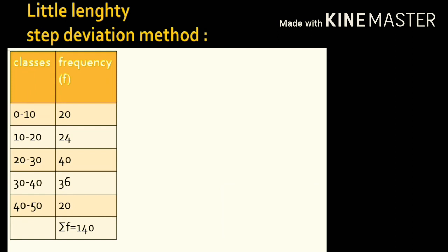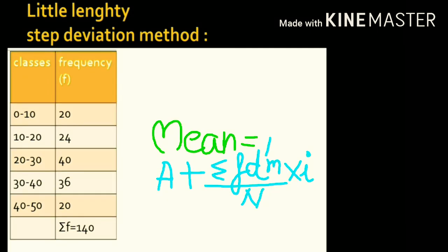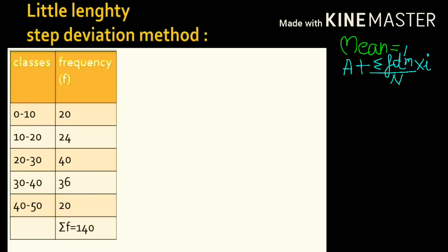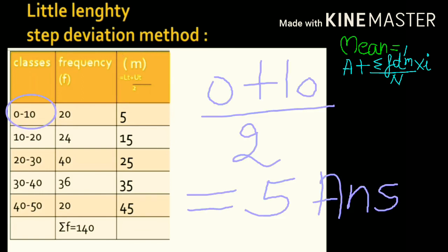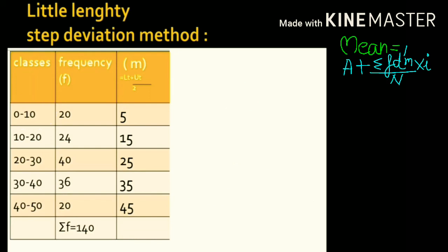The last question is a continuous series because it contains classes, and we are going to solve it with the step deviation method. The formula for step deviation method is A plus (σfd'm upon n) into i, where A is assumed mean, i is class interval, and m is the middle value of a class. For the first class, the middle value of 0 and 10 is 5. Using the formula: lower limit plus upper limit upon 2, that is 0 plus 10 upon 2, which is also 5. We solve similarly for other classes.